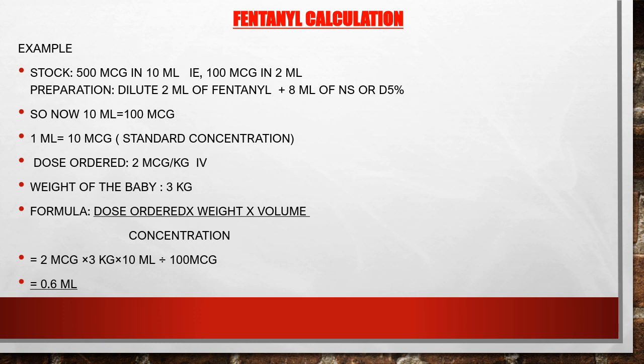Fentanyl calculation. Dose ordered: 2 microgram/kg IV. Weight of the baby: 3 kg. Using the same formula — dose ordered times weight times volume divided by the concentration: 2 microgram times 3 kg times 10 ml divided by 100 microgram. You will get 0.6 ml.